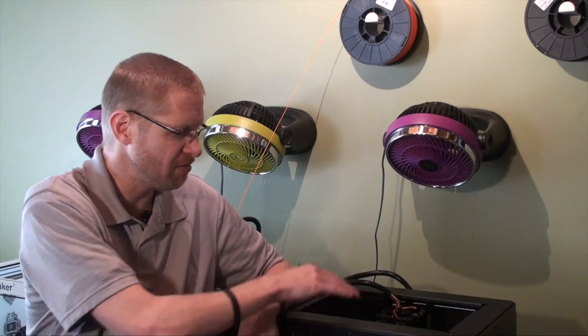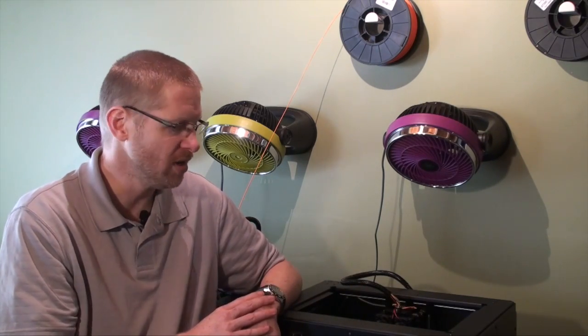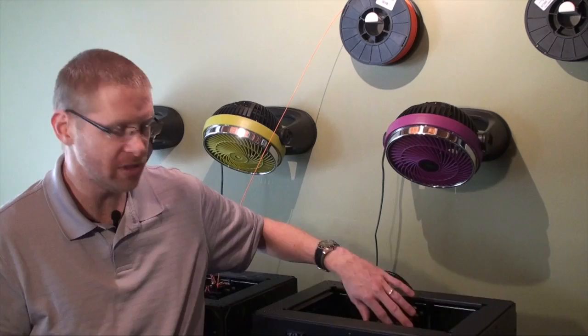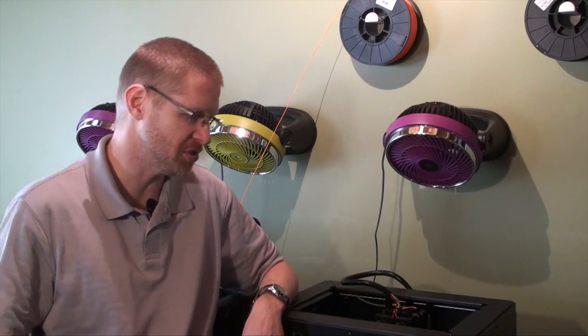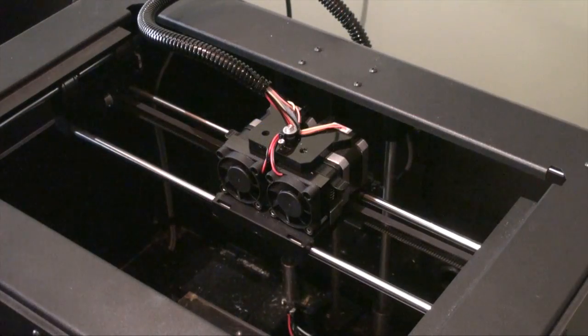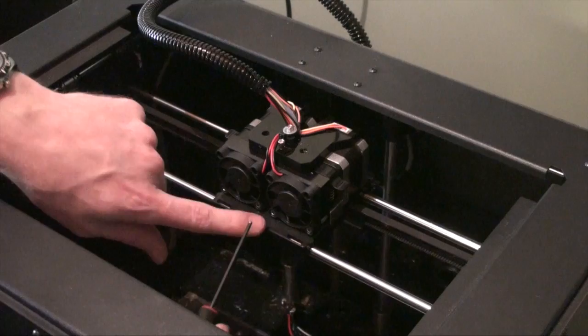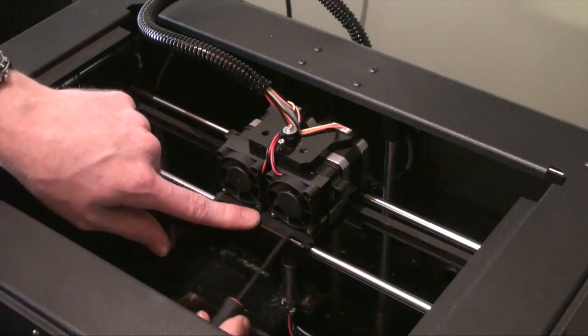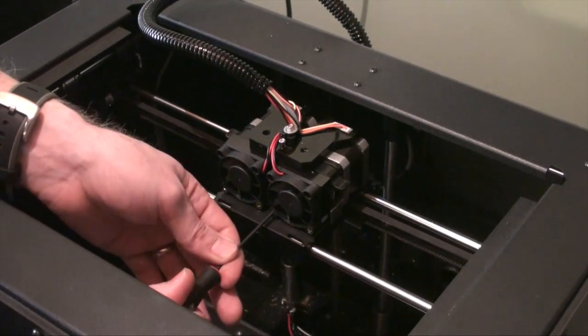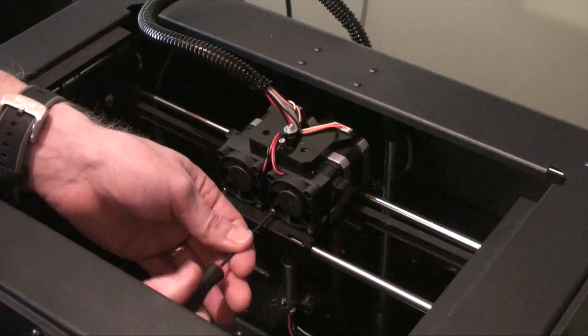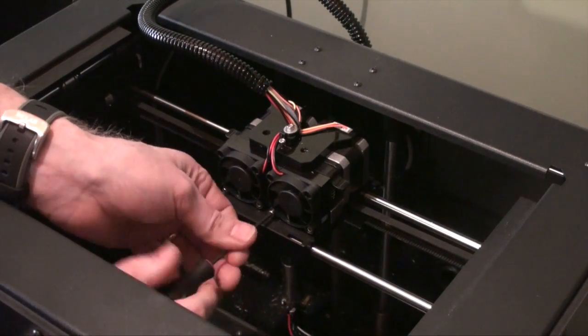I've got the printer turned off. I've got the filament unloaded from the printer. And we're going to go ahead and remove two of these screws here. I'm going to bring you in for a close-up to show you that. Okay, so all we're going to do here is we're going to go ahead and remove these two M3-type screws in the front here.